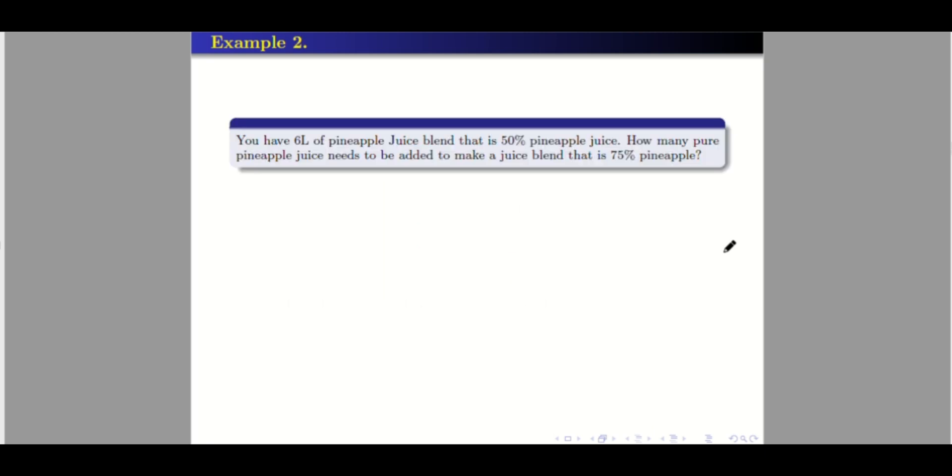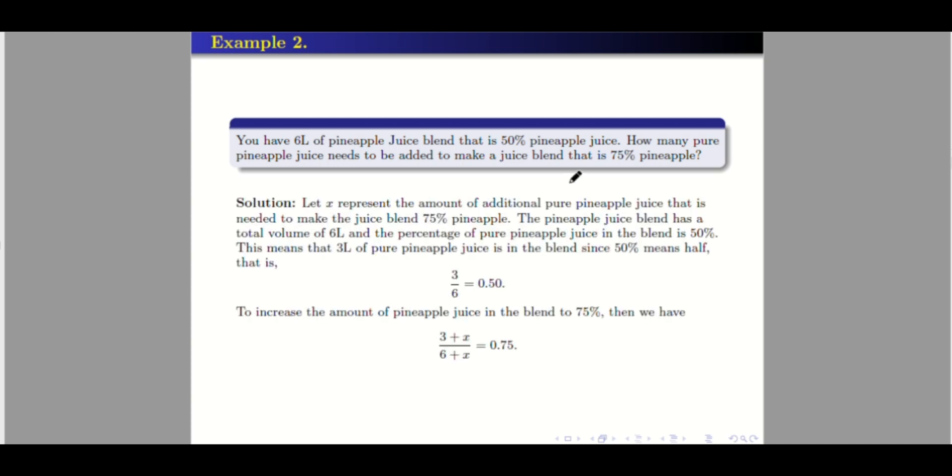Example 2. This is similar to Example 1. You have 6 liters of pineapple juice blend that is 50% pineapple juice — meaning in a total of 6 liters, 50% of it is pineapple juice. How many liters of pure pineapple juice need to be added to make a juice blend that is 75% pineapple? Let X be the amount of additional pure pineapple juice to be added to increase the blend from 50% to 75% pineapple.